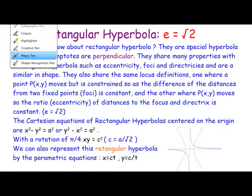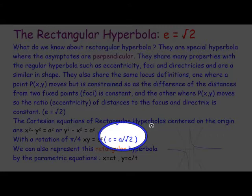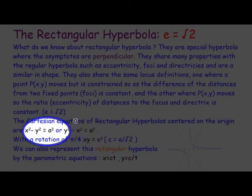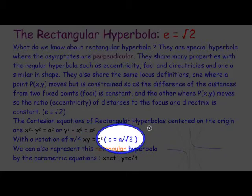There's actually a relationship between a and c. When we rotate x squared minus y squared equals a squared by 45 degrees, we get xy equals c squared. There's a relationship between a and c: c squared equals a squared on 2, or equivalently, a squared equals 2c squared.